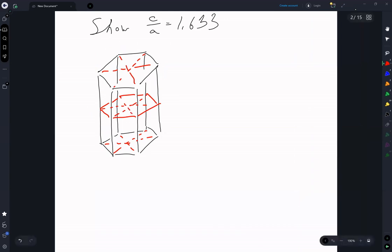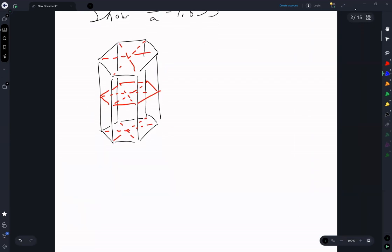And for HCP, we have atoms at each of those vertices. Here, here, here, here, here, and then every other triangle, the center of every other triangle.